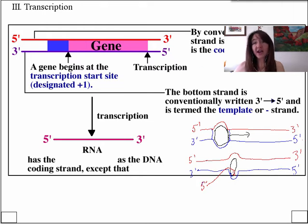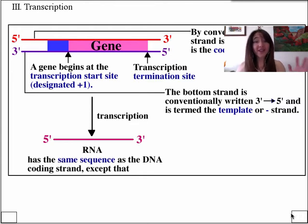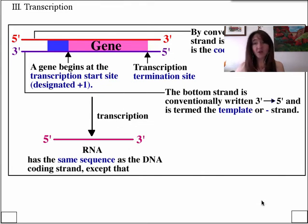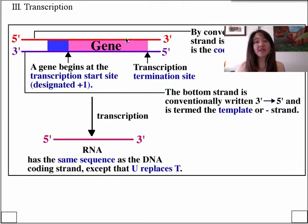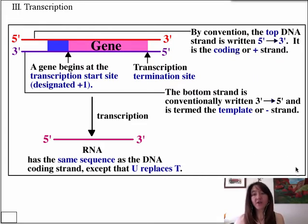So let's make sure again — the RNA has the same sequence as the coding strand of DNA, except that U's replace T's. So what that means is that if you're ever given the sequence of the coding strand of DNA, it's very simple to write the RNA sequence: you just write U's everywhere that you see a T. Awesome. Let's continue on with our vocabulary.